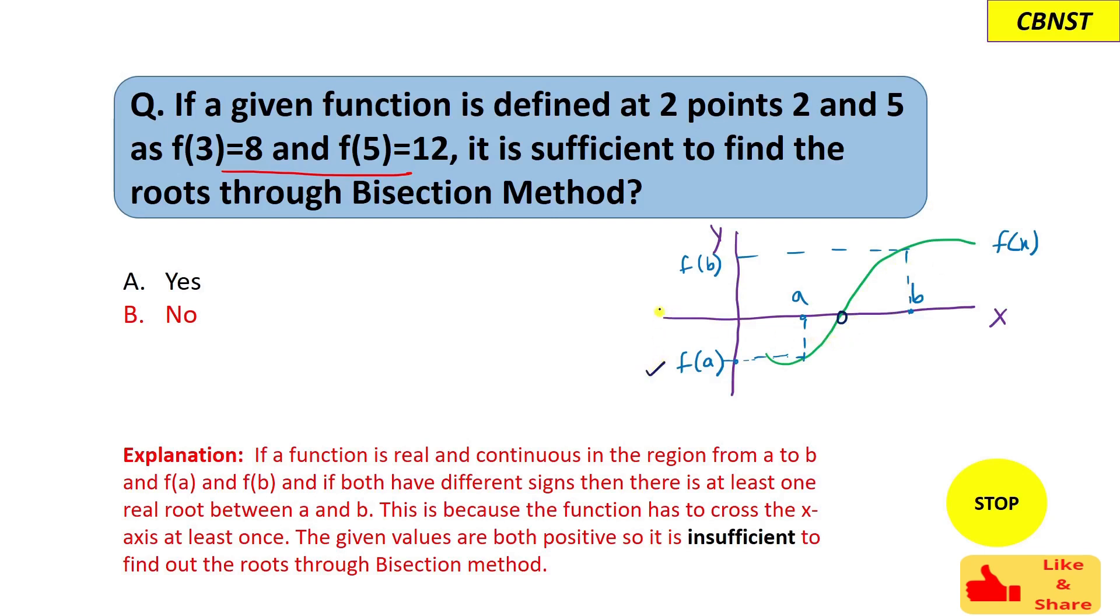So the main condition is f(a) and f(b) should be of opposite sign. But here you can see if we consider 3 as a and 5 as b, the function value f(a) and f(b) both are of positive sign, that means they are of same sign.